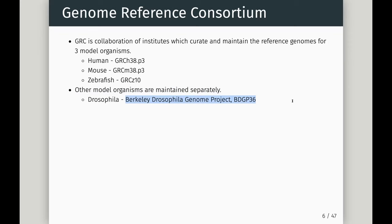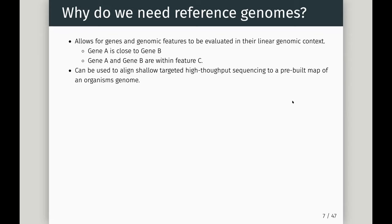Why do we need reference genomes? We need a reference genome to put our shallow sequencing data into context of the full genome. Without one, we don't know how our genes and genomic features relate to each other — we can't evaluate whether gene A is close to gene B in a linear context, or whether they're within a larger feature like a TAD (topologically associated domain), which would mean they share regulatory domains.